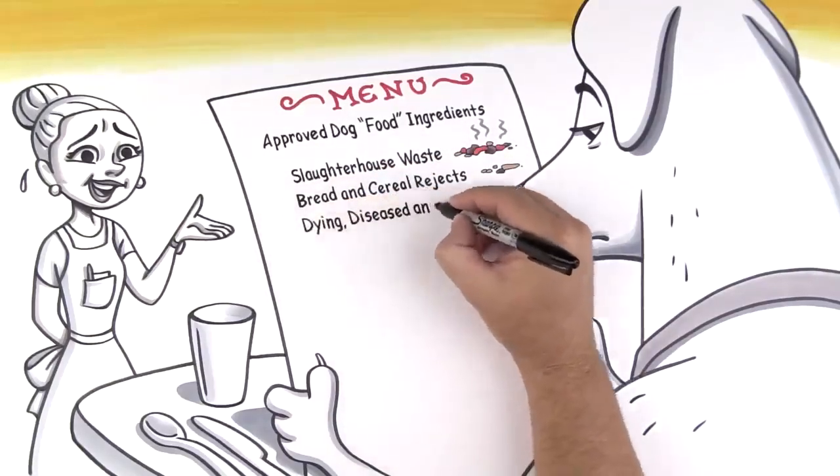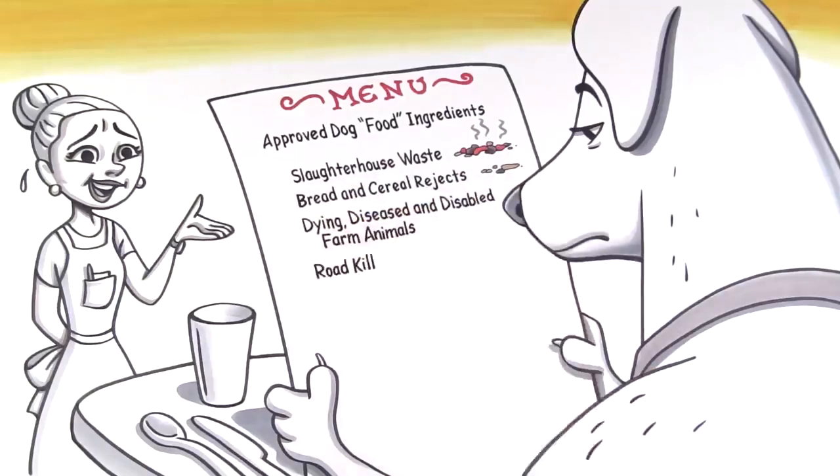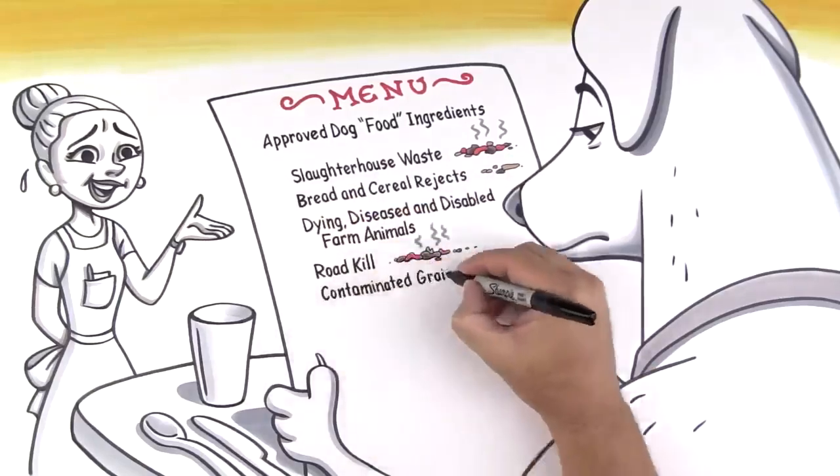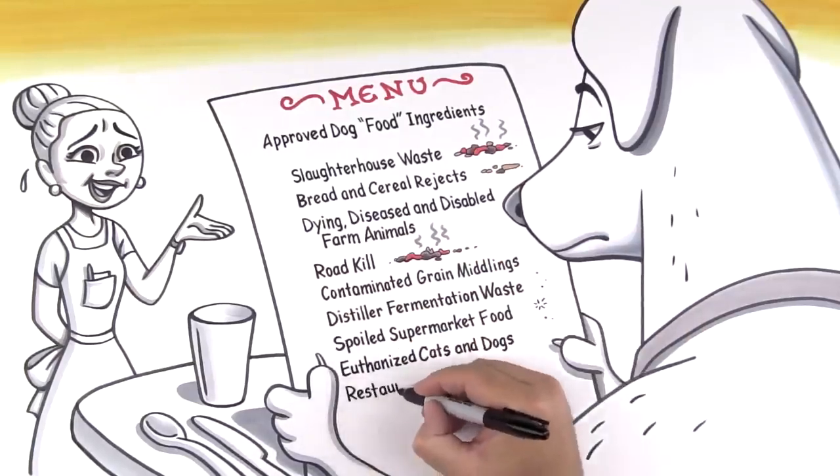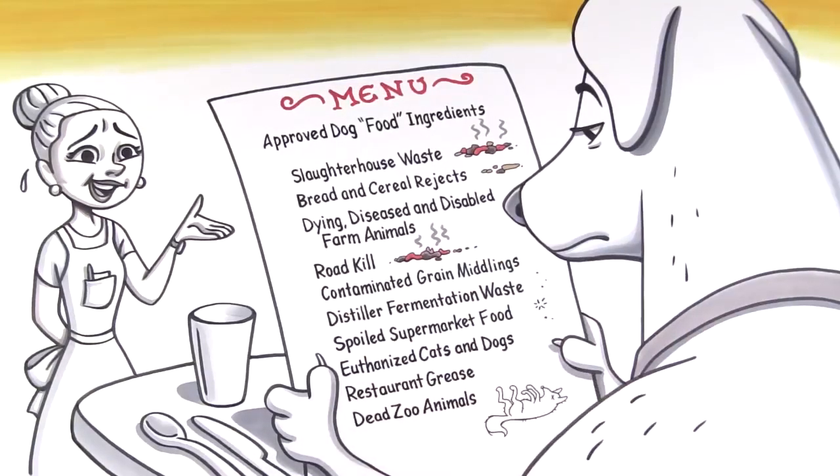Dying, diseased, and disabled farm animals. Road kill, contaminated grain, spoiled supermarket food, euthanized cats and dogs, restaurant grease, and dead zoo animals.